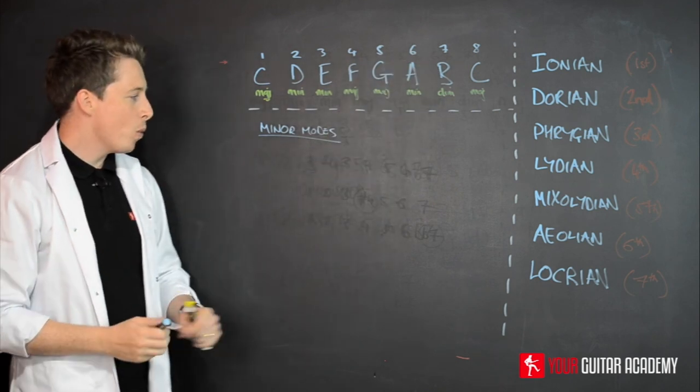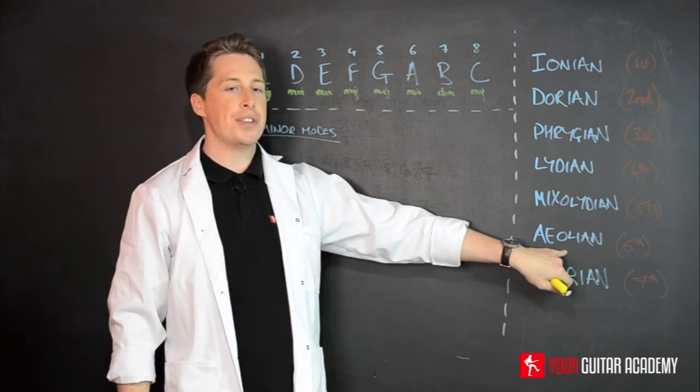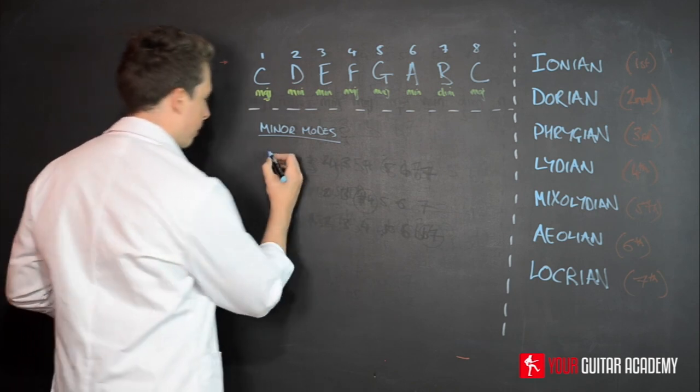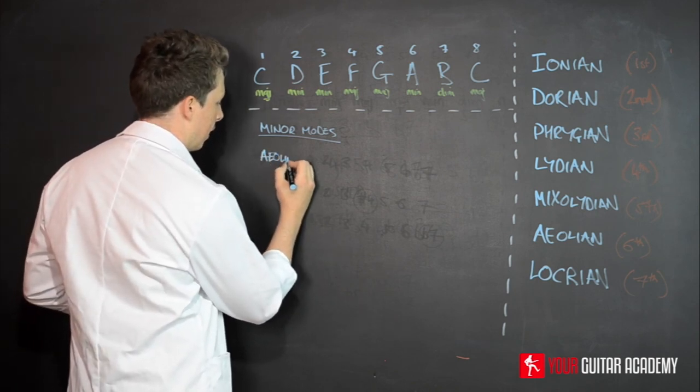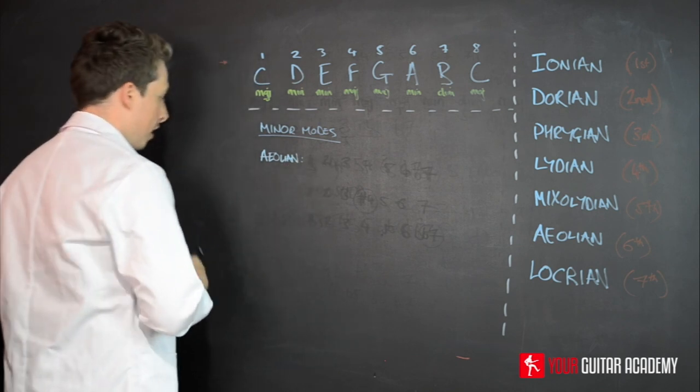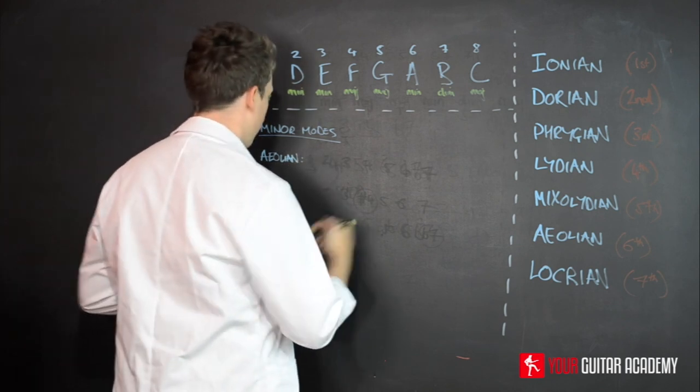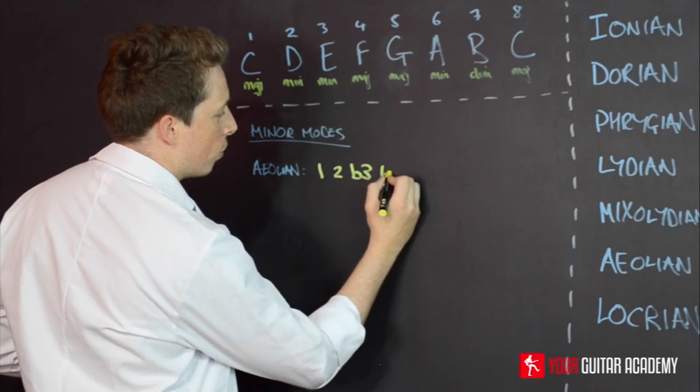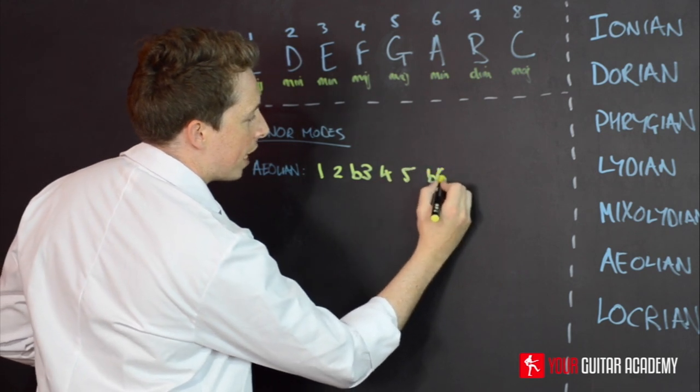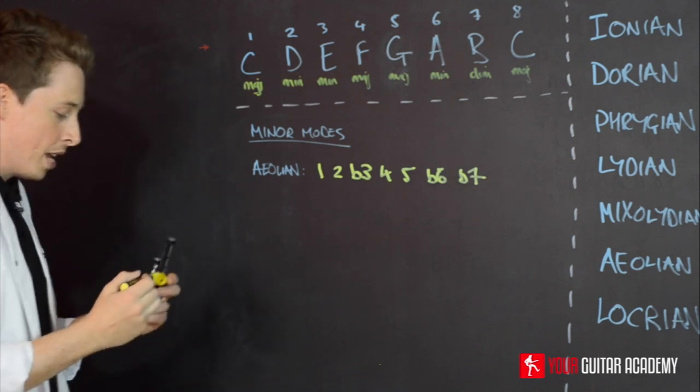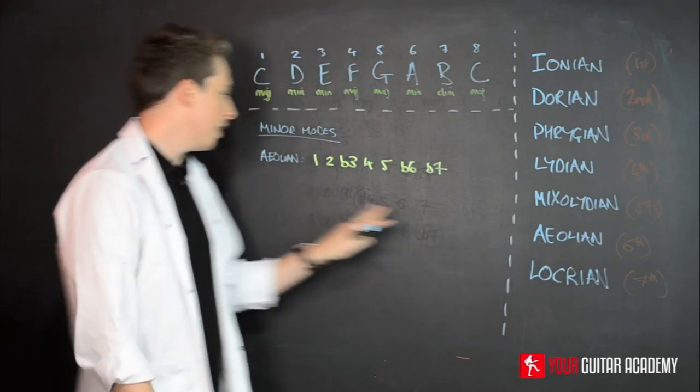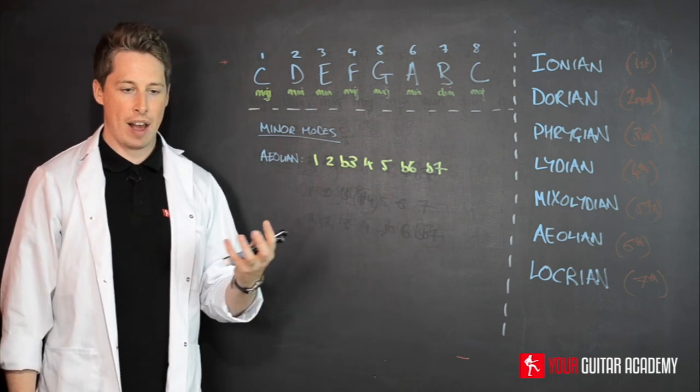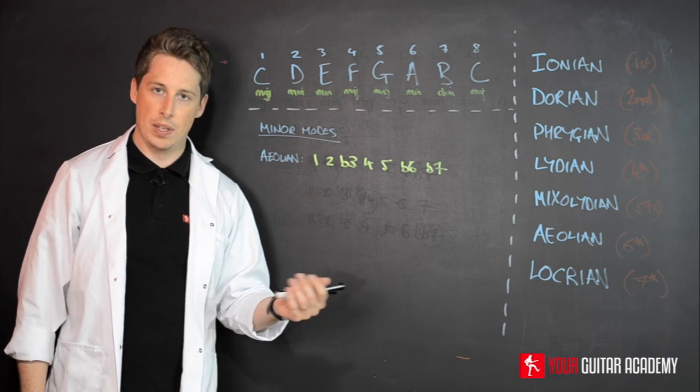Importantly, we know the Aeolian to be the natural minor. We understand that as the natural minor. So that's the first one that's going to go on the board, the Aeolian. So the reason I've put that one up first is because as we know it as the natural minor, we're very likely going to have used that a lot, probably, at this point. So it's our kind of base for understanding the difference between the rest of the minor modes.